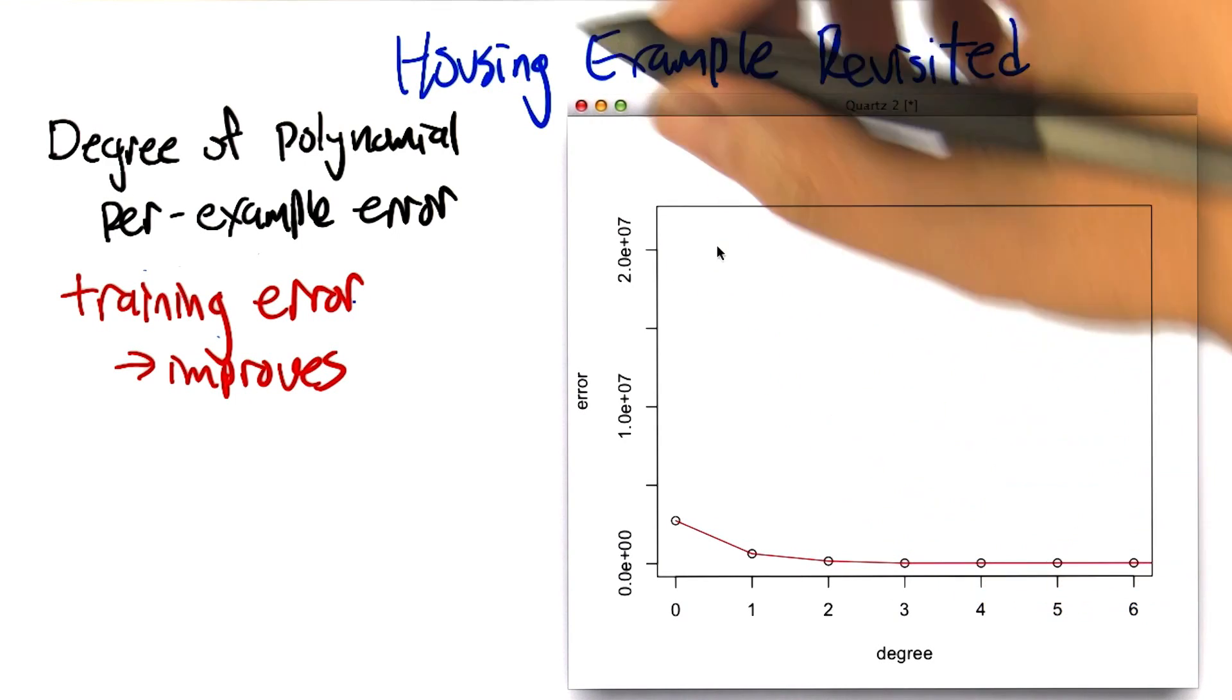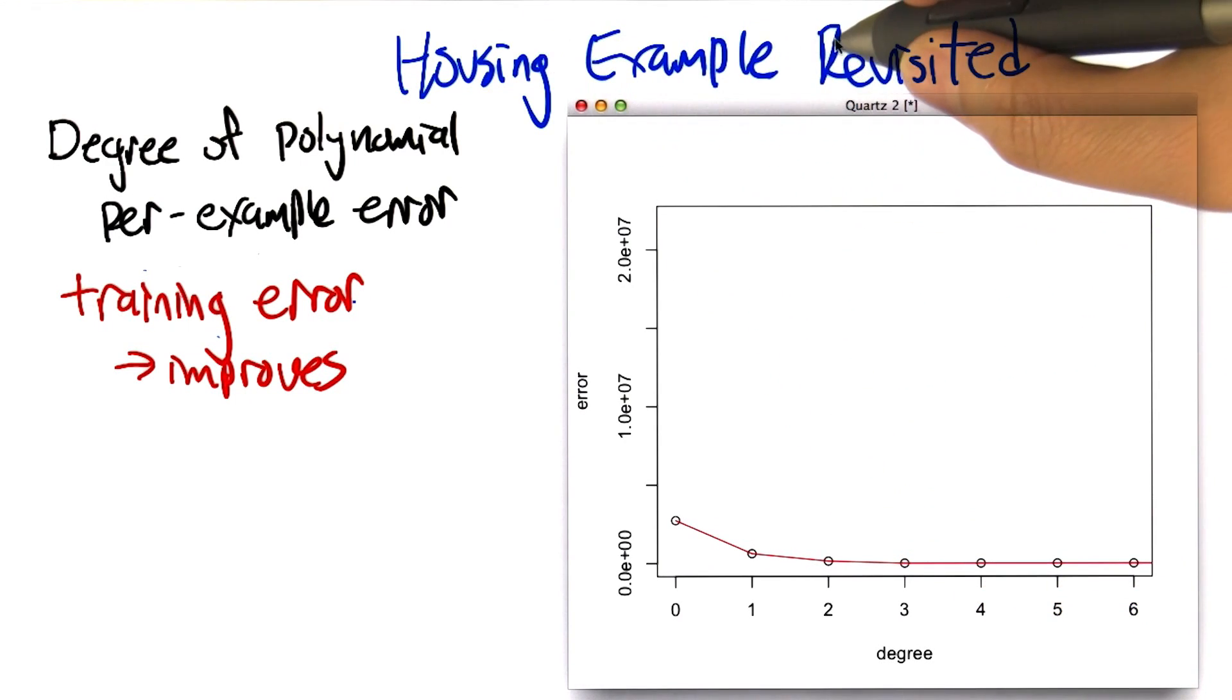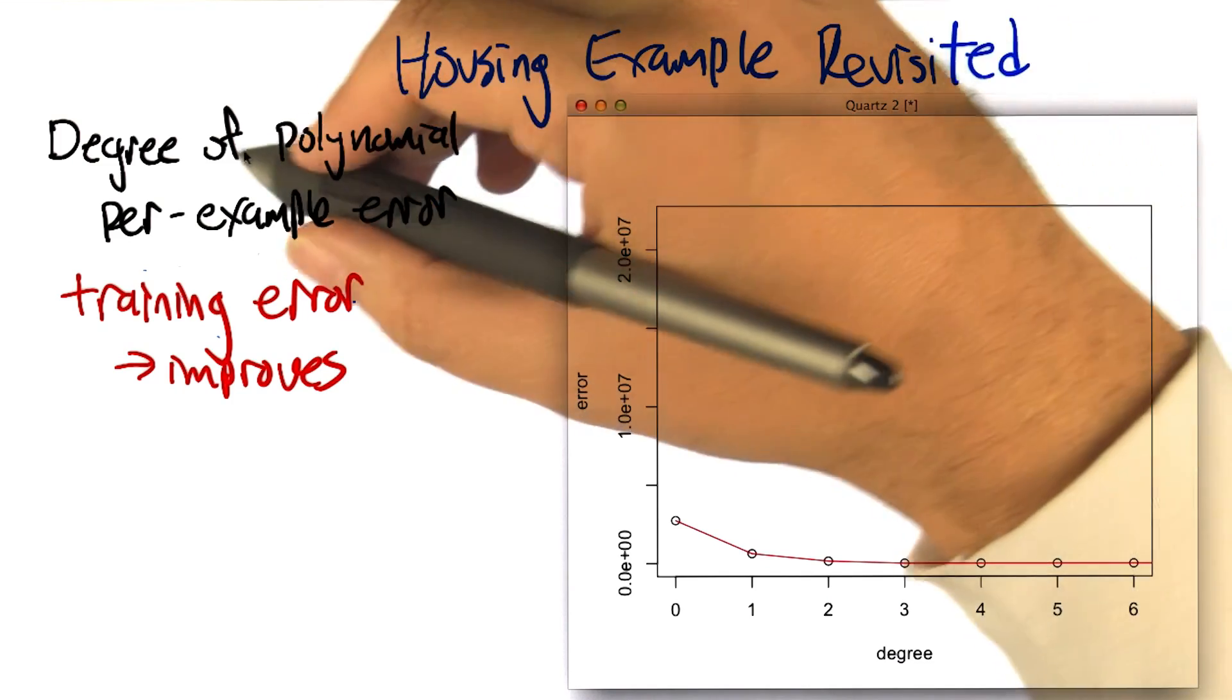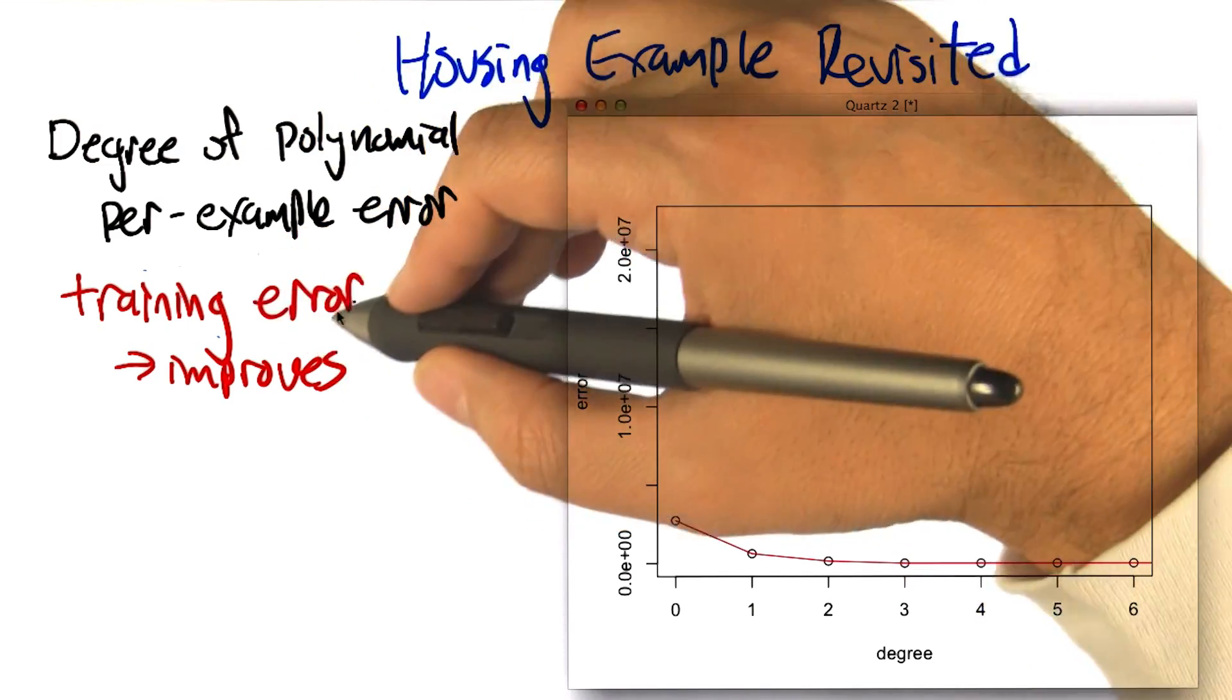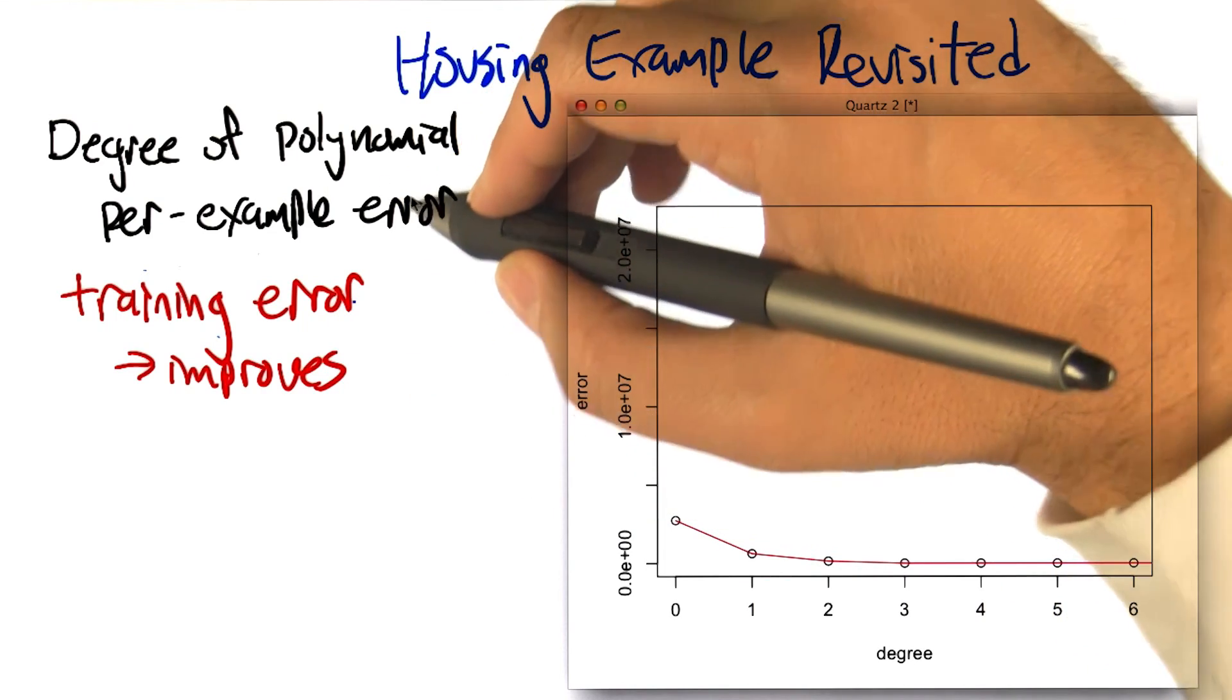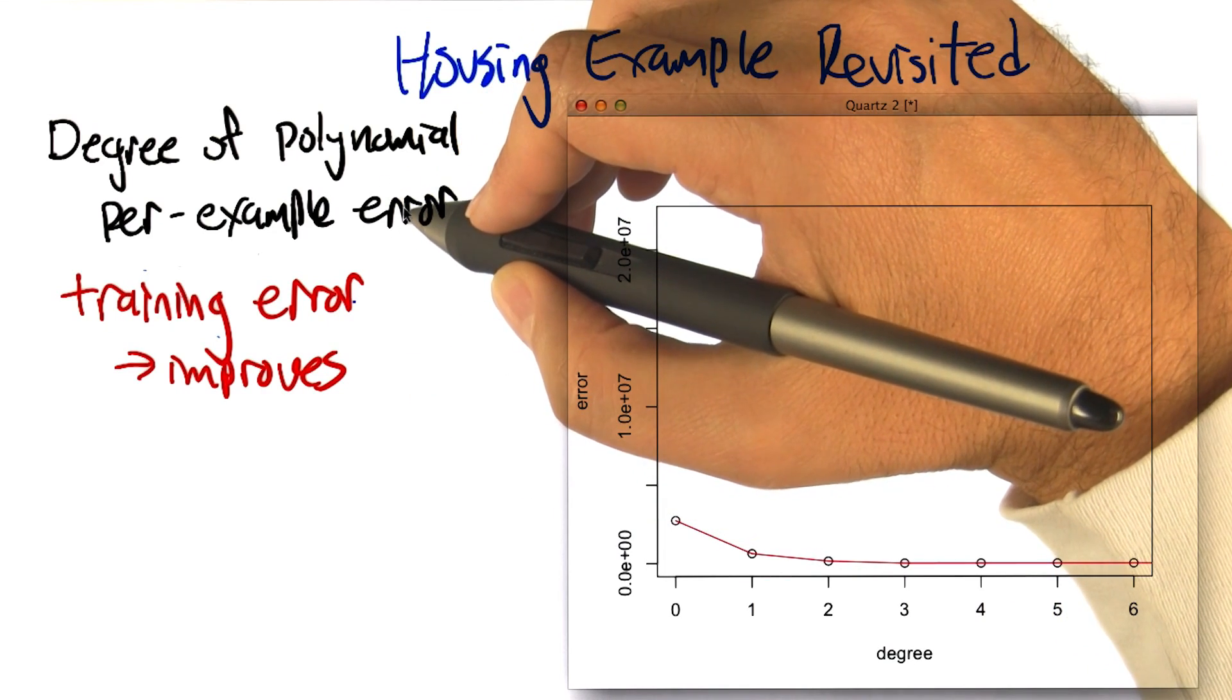All right, so here's how we're going to look at this. As you may recall, in this housing example, if we look at different degrees of polynomials and how well they fit the data, let's look at the training error, the per example training error. So how far off is it for each of the data points.